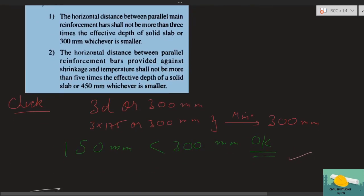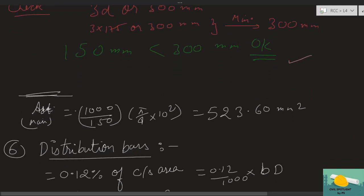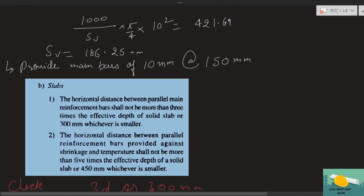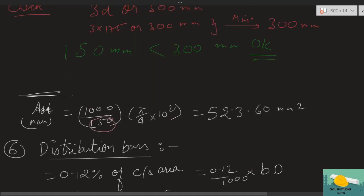Checking provided area: Ast_provided = (1000/150) × (π/4) × 10² = 523.60 mm². Required was 421.69 mm², and provided is 523.60 mm² — so the section is safe. All good so far.